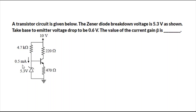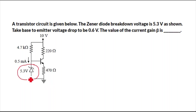The whole circuit operation depends on the Zener diode, because it determines what potential is applied at the base terminal of the BJT.